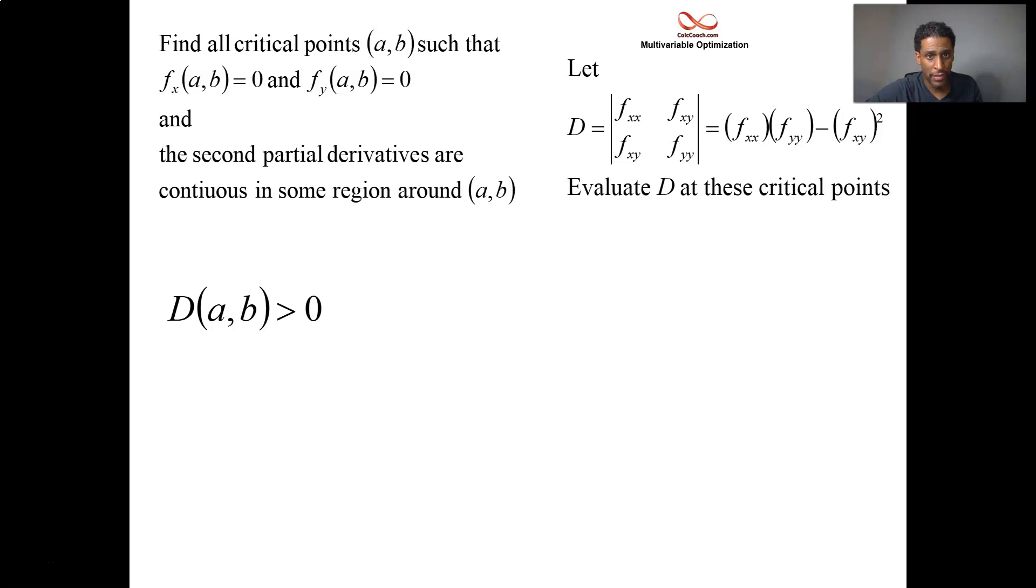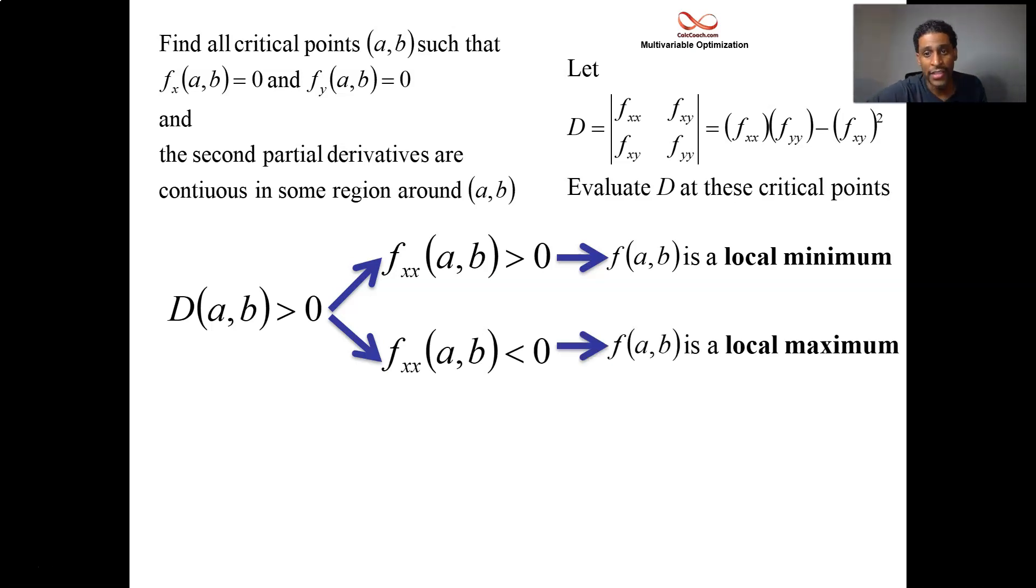When that value is positive, then you could look at the second derivative with respect to X, the double X. The sign of that is going to be the way you dictate whether it's a local max or a local min. If your double X is positive, that's kind of like concave up like a cup, so your min. If your double X is negative, concave down like a frown, so what you have is a local max. Now, it's the second derivative with respect to X and then with respect to X again, that is the deciding factor.